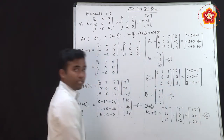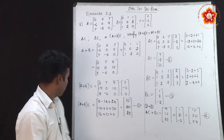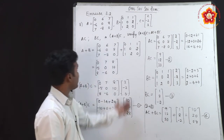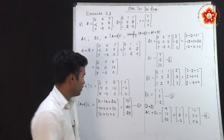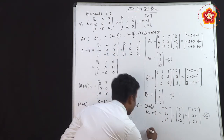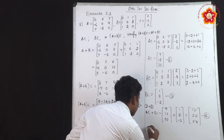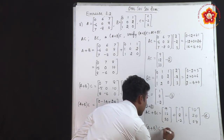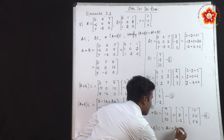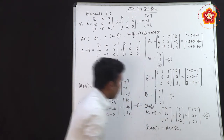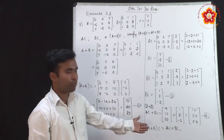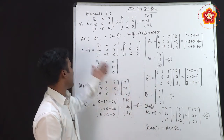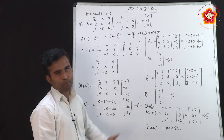Comparing equation 1 and equation 4: (A+B)C = [10;20;28] = AC + BC. So the distributive law is satisfied and verified. We found AC, BC, and (A+B)C successfully.